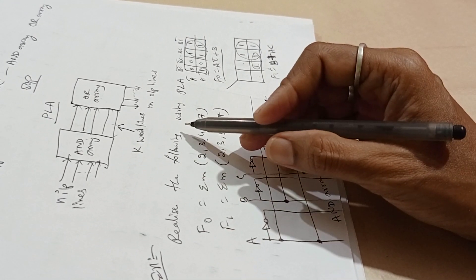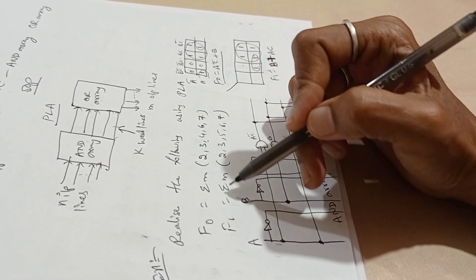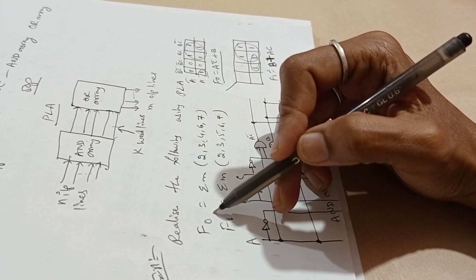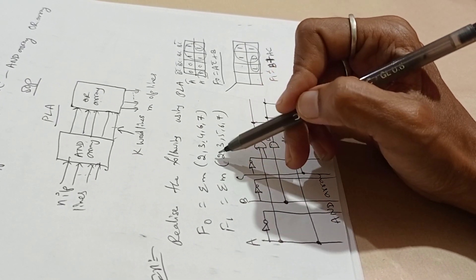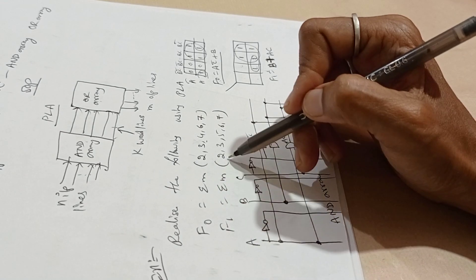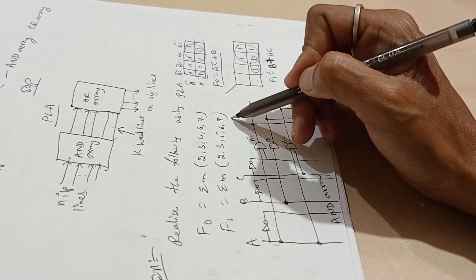We will see an example. Realize the following using PLA. The given expressions: F0 is 2, 3, 4, 5, 6, and F1 is 2, 3, 5, 6, 7.